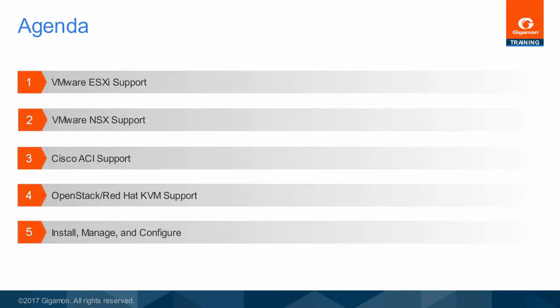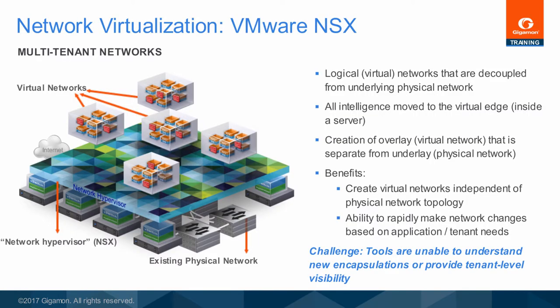Building on existing ESXi support, GigaView VM also supports VMware NSX in a similar manner, but with added features unique to software-defined data center automation through NSX Manager. VMware NSX offers ESXi-like functionality as a base feature set. Accordingly, GigaView VM provides virtual traffic access to NSX in the same manner as it does for ESXi. NSX goes on to provide new functionality for multi-tenant environments, and tenant level visibility in this multi-tenant environment is available through GigaView VM today, meaning the latest virtual networking solutions can be deployed while still maintaining high levels of visibility for monitoring and security.